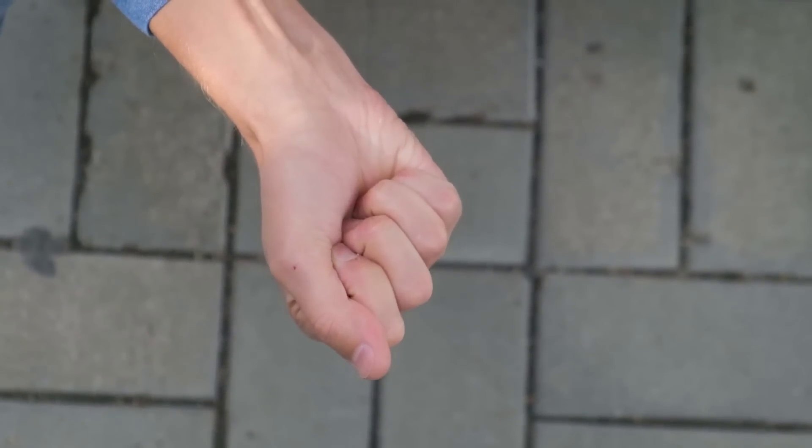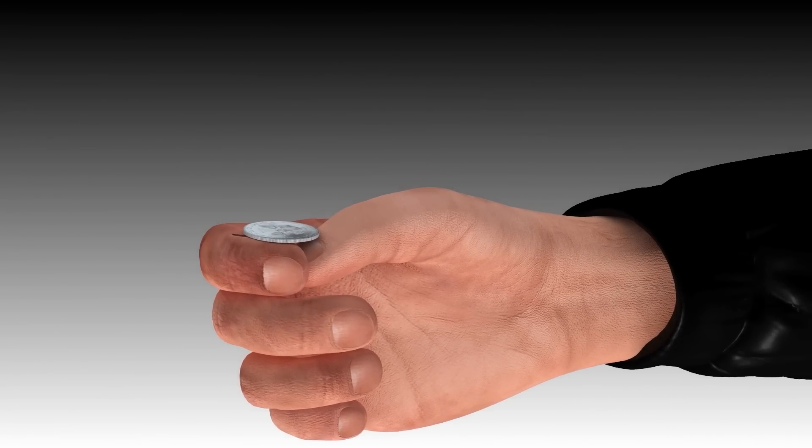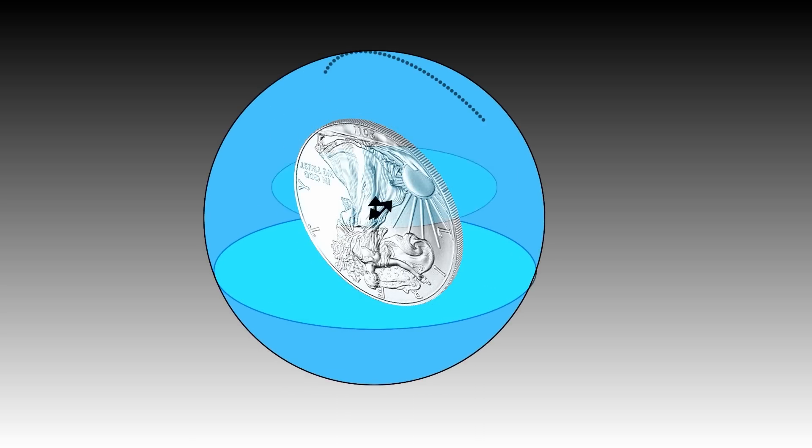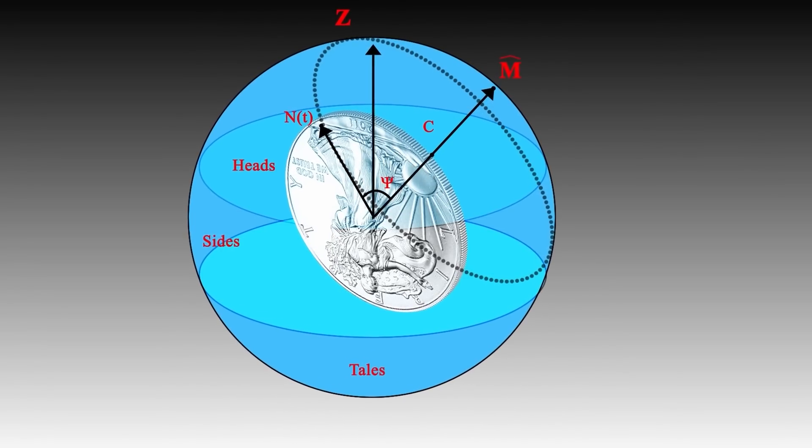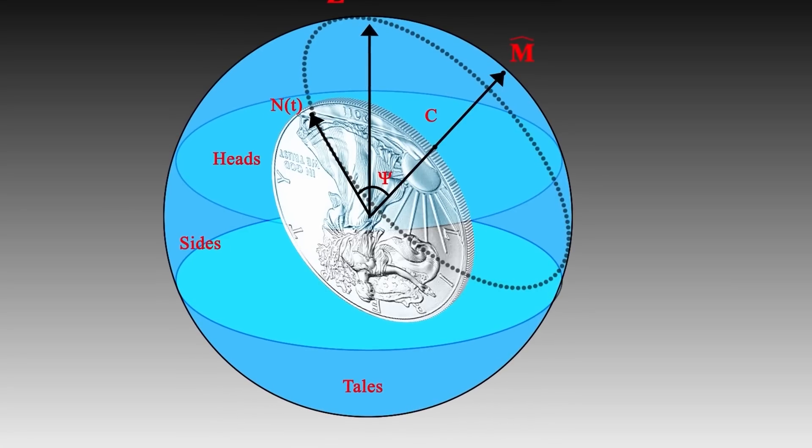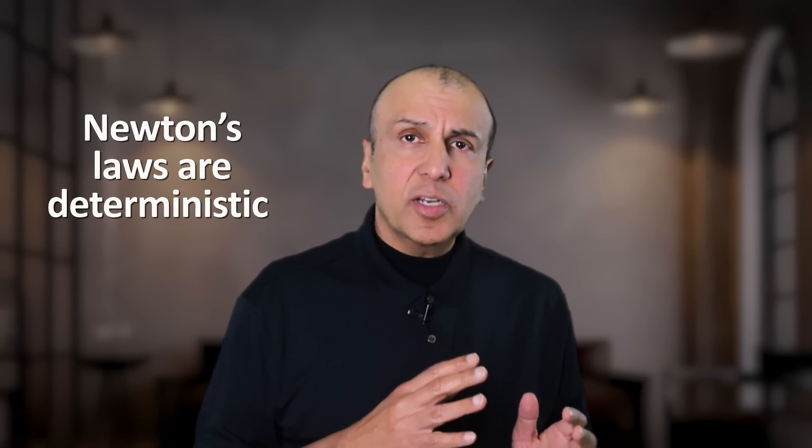Or is it? This is really not a random event. If we knew all the initial conditions, such as angles, forces, distances, etc., we could use Newton's classical mechanics equations to calculate the trajectory of the coin and predict with certainty whether the coin would land heads or tails. Newton's laws are deterministic. Given the same set of initial conditions, the result will always be the same.